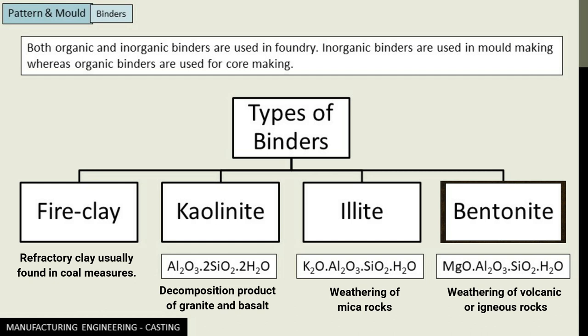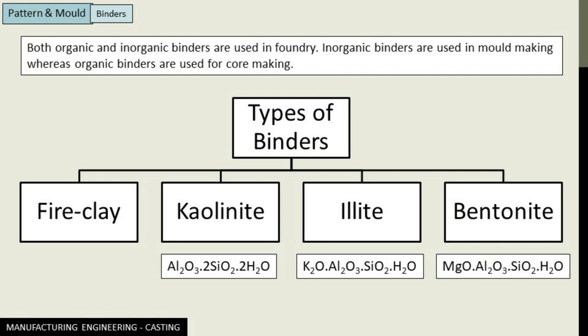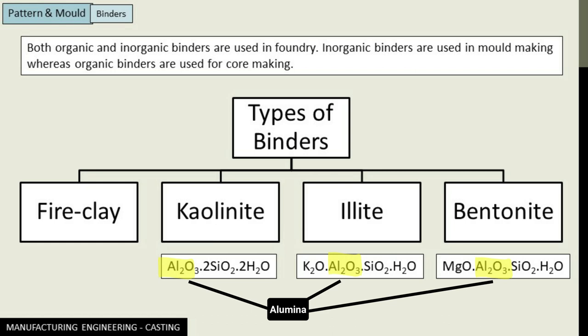If you clearly examine all these kinds of inorganic binders, you will see that one composition remains the same — the basic constituent of all these refractories is Al₂O₃, that is alumina. So the presence of alumina defines a binder. Of all the types of clay binders, bentonite is the most commonly used.